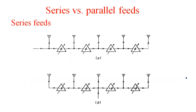Now, serial versus parallel feeds. In phased array antennas, the input to the antennas or the output collected from them can come from a source. When all antennas are used for transmission, there are two types of feeding techniques to supply the input signal: serial feed and parallel feed. In serial feed, elements are fed one after another — first element, then second, third, and so on.